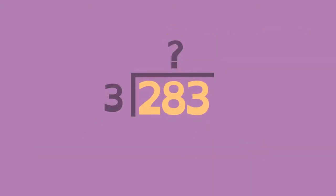When numbers are large, we think of them in parts. First, look at the number in the hundredths place. 2 divided by 3 doesn't result in a whole number. What if we include the number in the tens place?